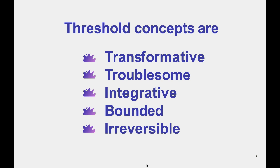The third characteristic is integrative: once you've learnt a threshold concept, other related concepts suddenly make more sense and you're able to understand how everything links. It's a more networked way of learning where linked subject matter also begins to make sense. Fourth is bounded: learning a concept in a particular discipline is demarcated within that discipline.